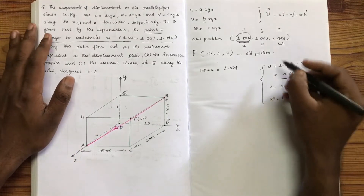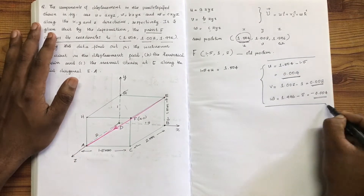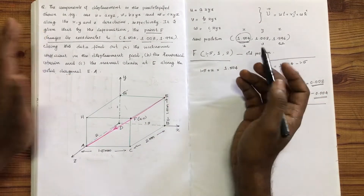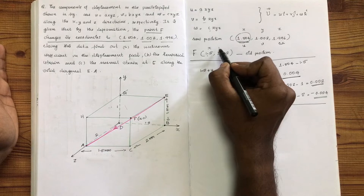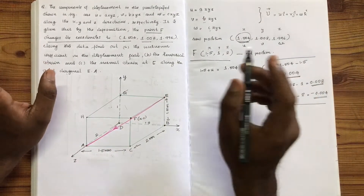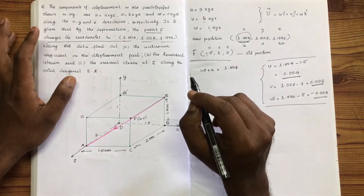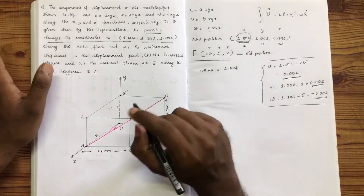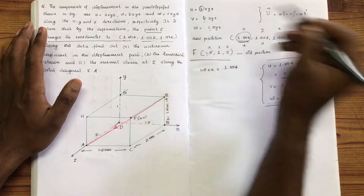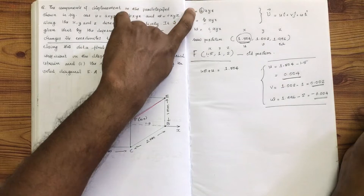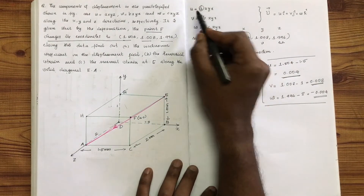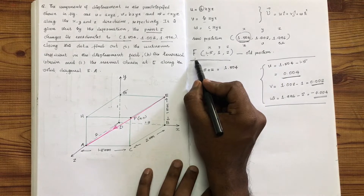We have point F, and the coordinates of F are (1.5, 1, 2). The displacement u at F is equal to 0.004. The unknown quantities are a, b, c. At F, x = 1.5, y = 1, z = 2.